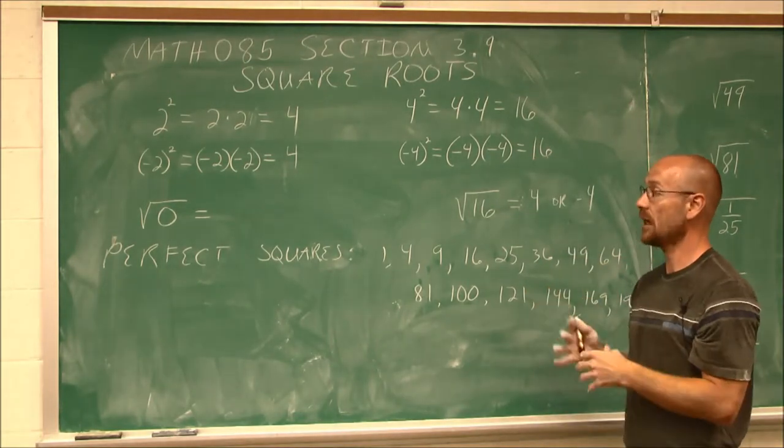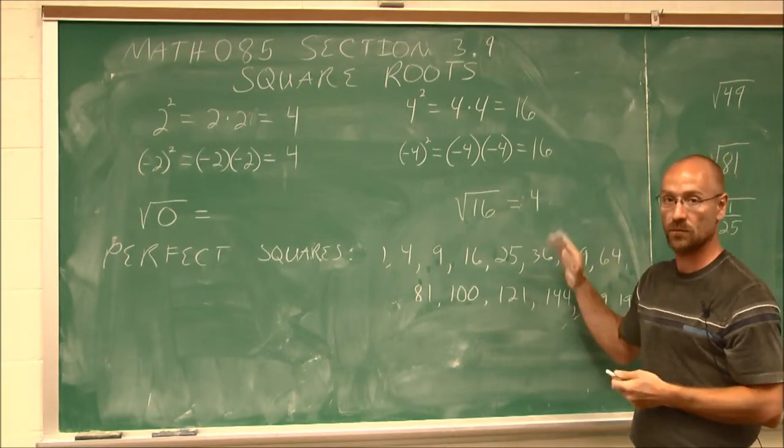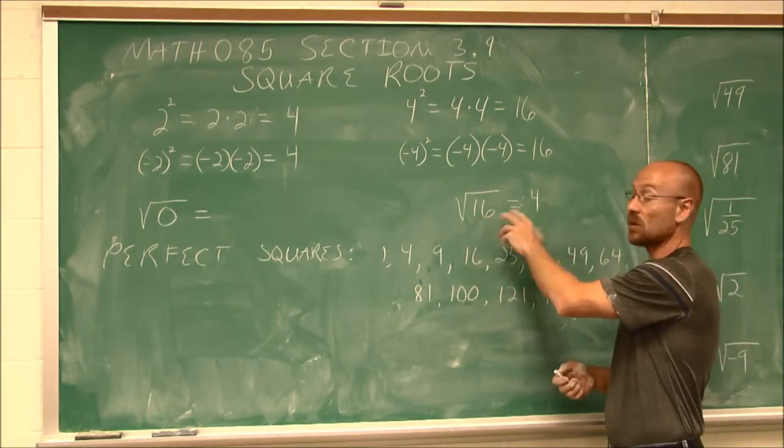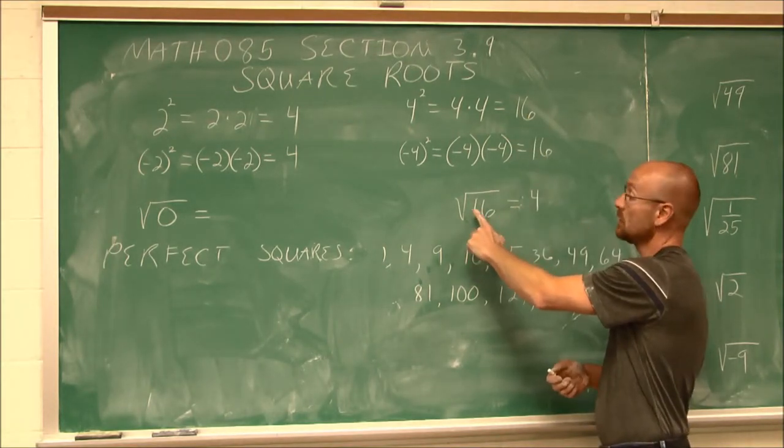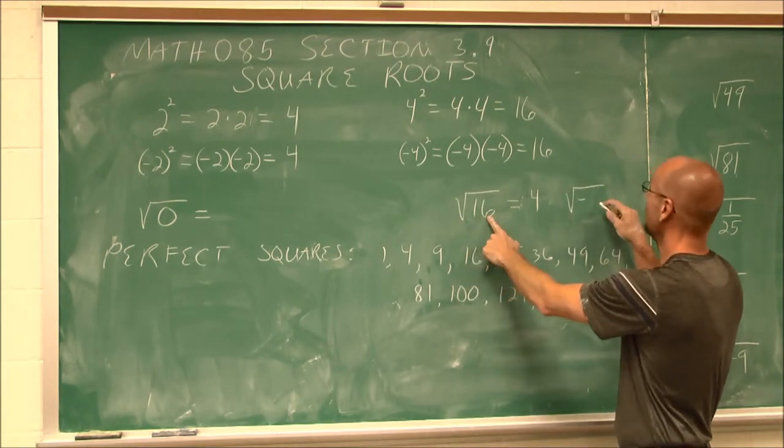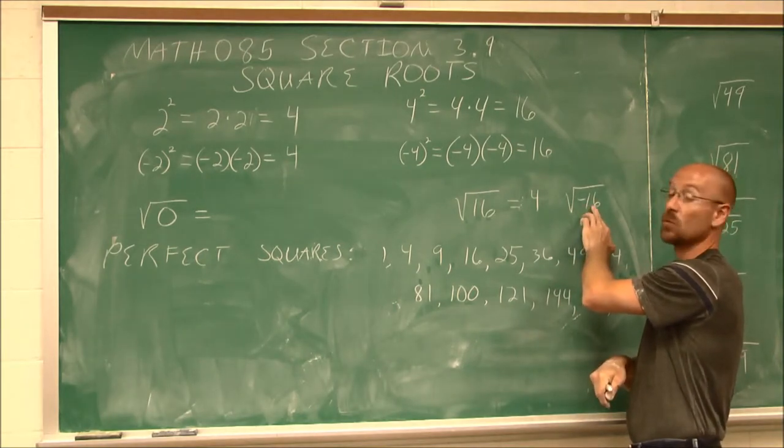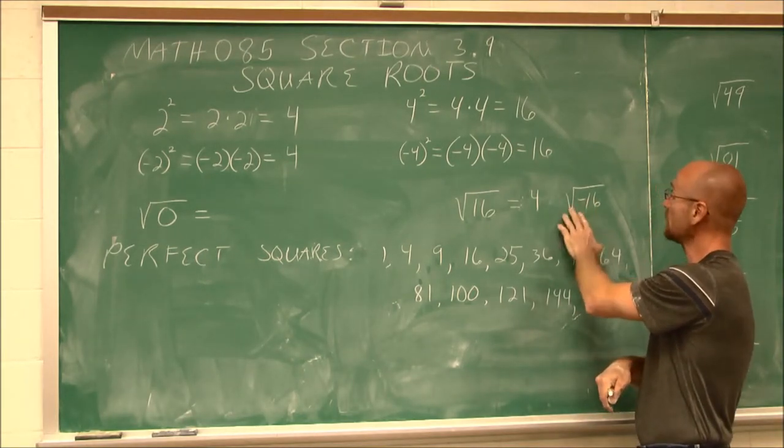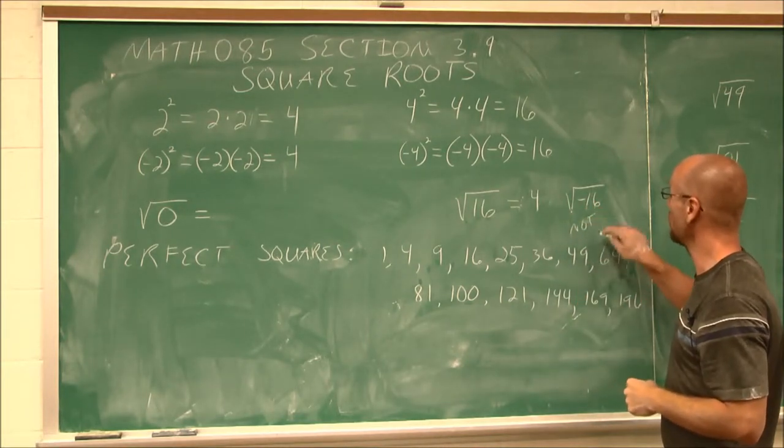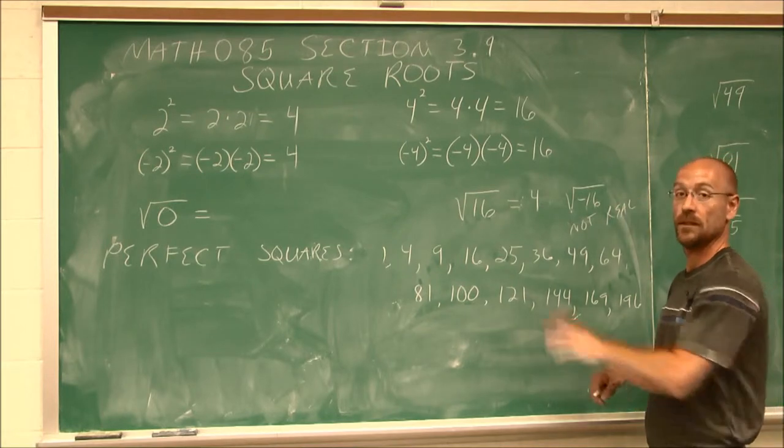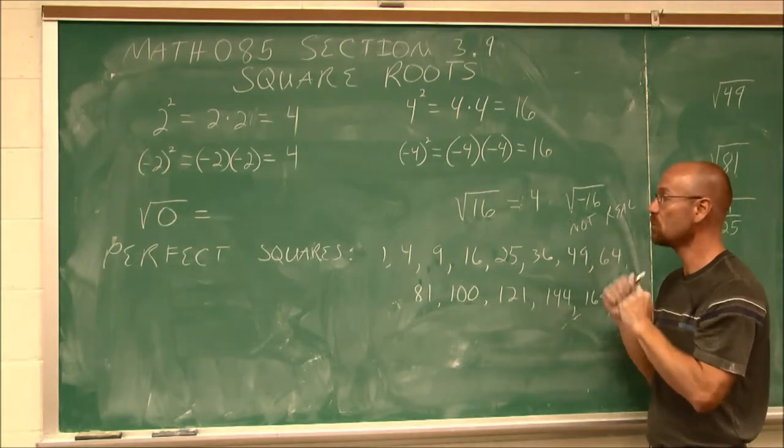So what we're going to look at in this section is only the positive values. We're not going to worry about those negative ones. And because whenever you square a value, it's always a positive value like we've seen here, you'll never be able to take the square root of a negative number at this level of math. This is not a real number. The square root of a negative is not a real number. That's what we would say. We would actually write out not real. So we're not going to worry about that. If we see that, all we're going to say is not real at this point in math.